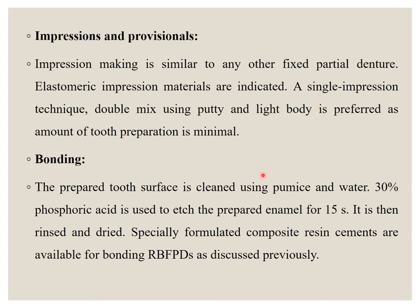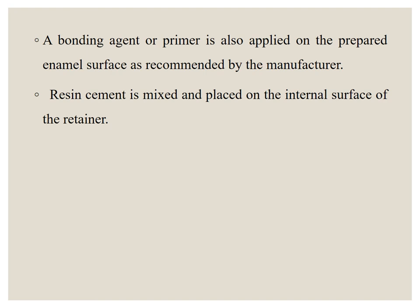Coming to impressions and bonding: impression making is similar to FPD — an elastomeric impression is indicated using a double mix technique with putty and light body. For bonding, the surface is cleaned with pumice and water. 30% phosphoric acid is used to etch the prepared enamel for 15 seconds, then rinsed and dried. Specially formulated composite resin cements are available for bonding resin bonded fixed prostheses. A bonding agent or primer is applied on the prepared enamel surface as recommended by the manufacturer, and resin cement is mixed and placed on the internal surface of the retainer.